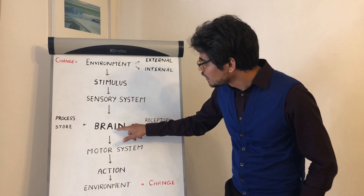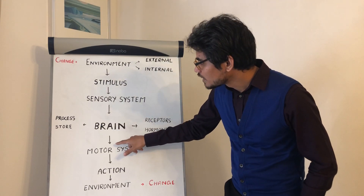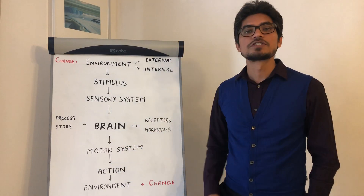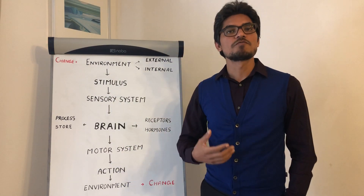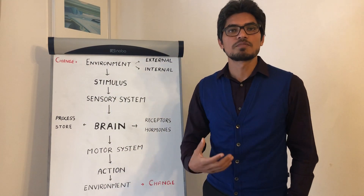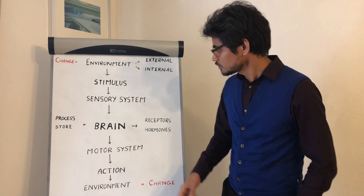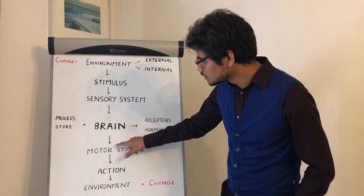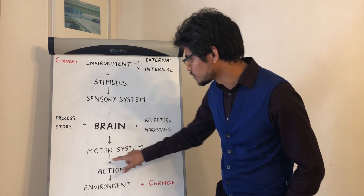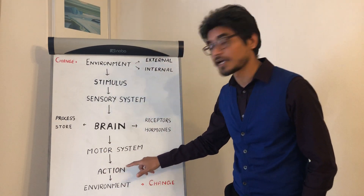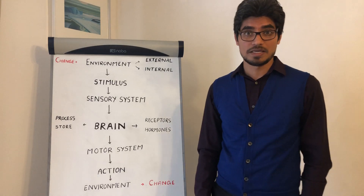The brain is going to relay information to our motor system, which is made of muscles that actually move our body, so that an appropriate action can take place.